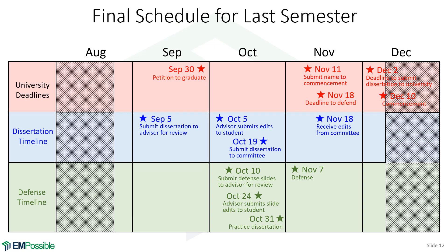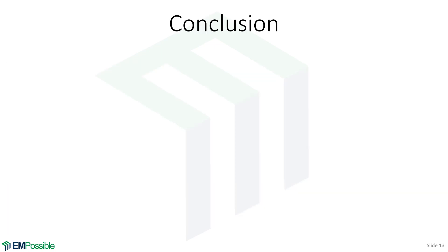Here's the final schedule for your last semester. We constructed this by starting with the university deadlines and working backward, building in margin for your advisor and committee to make edits and giving you time to make revisions. But it really doesn't have much margin for anything else that may go wrong, so think of these dates as the latest possible.